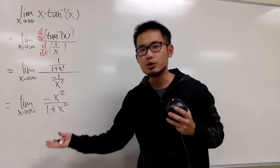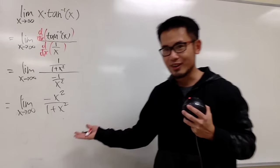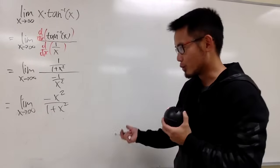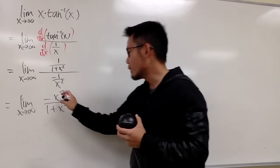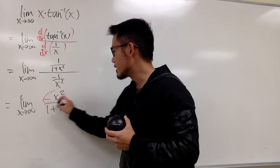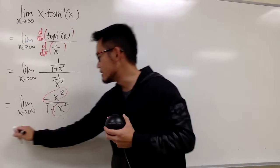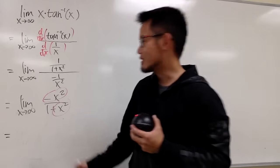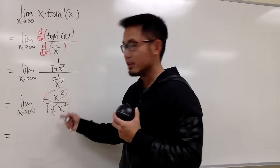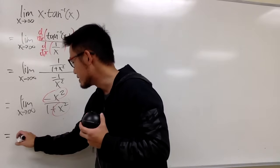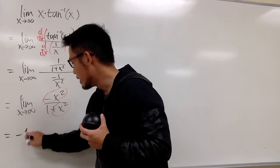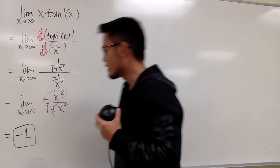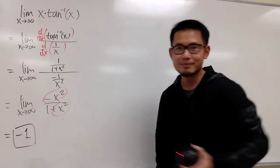Therefore, it's going to be negative x squared over 1 plus x squared. It seriously depends on how you choose to write down your work, but we just care about the leading terms. The final answer is just negative 1 when x is approaching positive infinity.